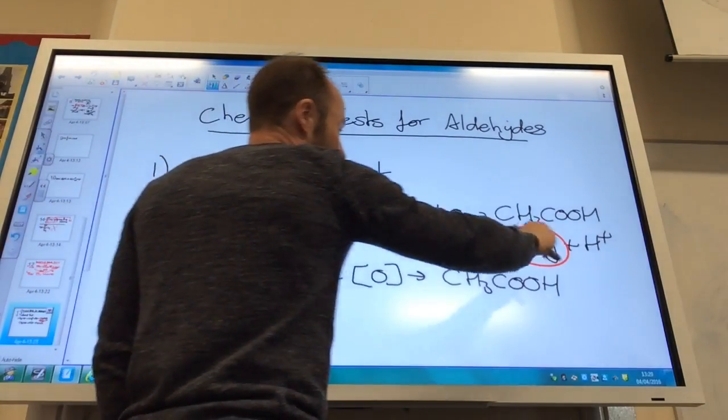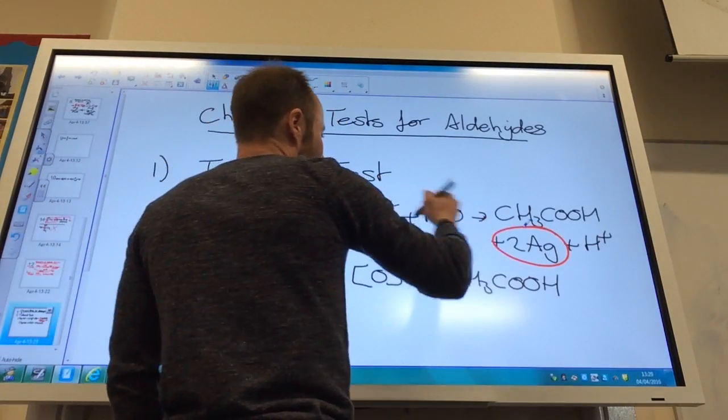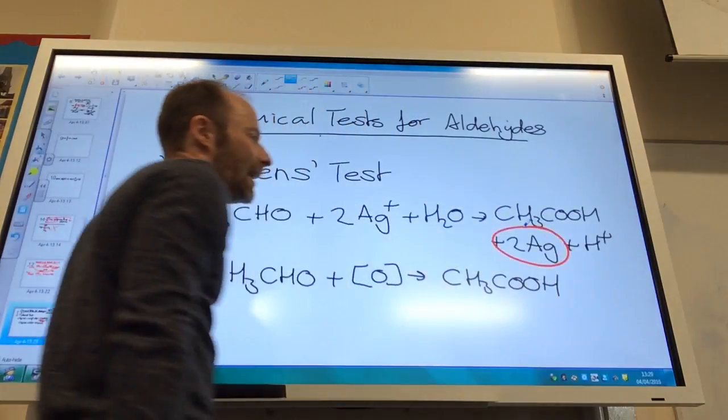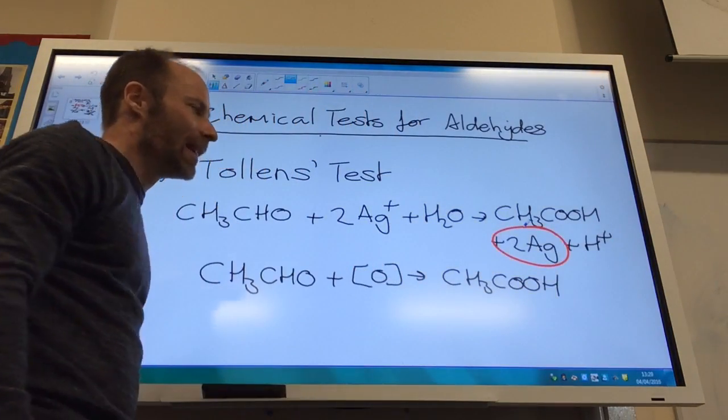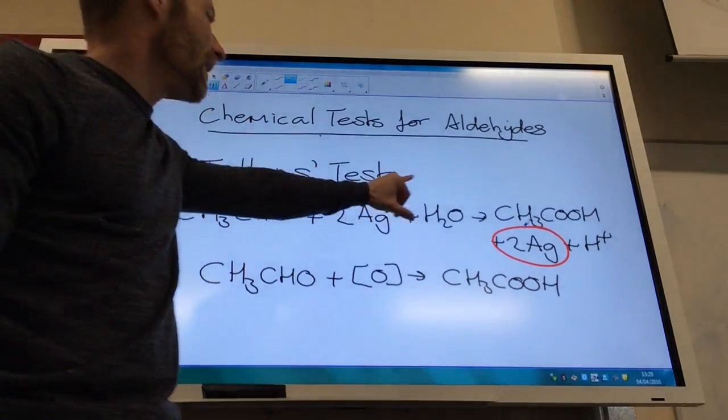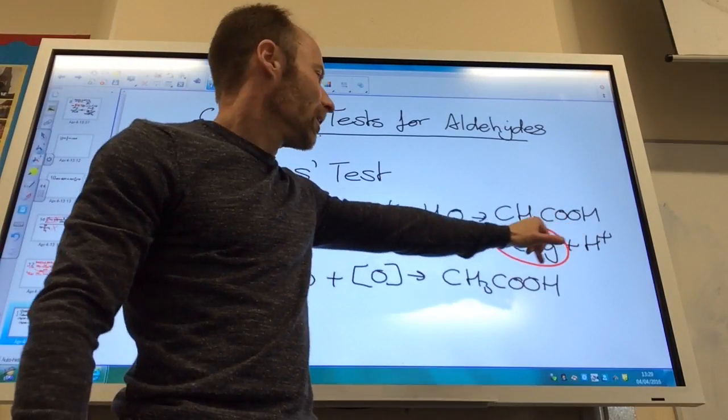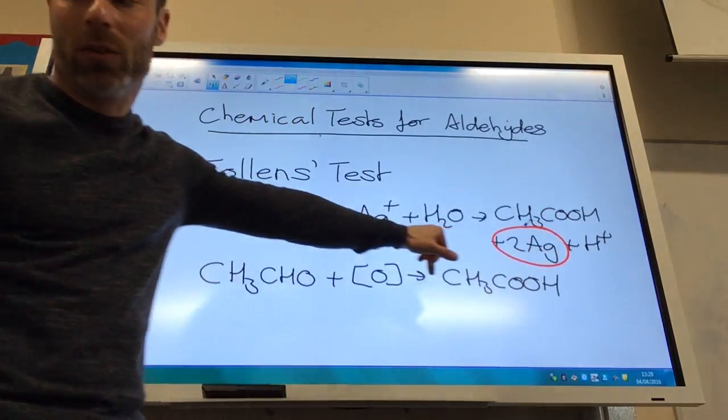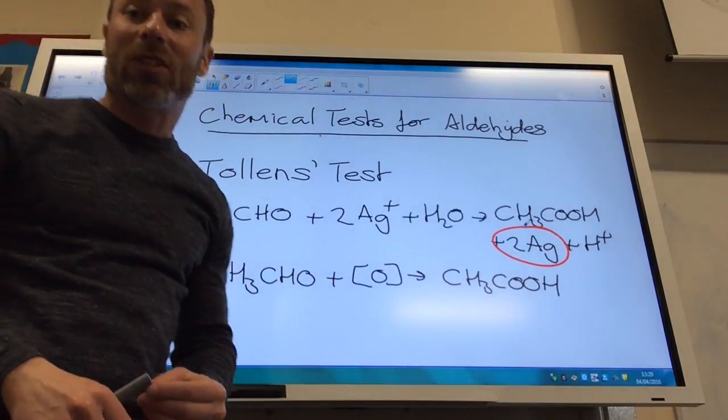This would be simplifying all of this. So it's taken out all of this, silver plus water, silver and H+, and just replacing it with that there. But obviously, to explain Tollens test, you need the silver because it shows me that I'm making silver metal, which is really important. So that's Tollens test.